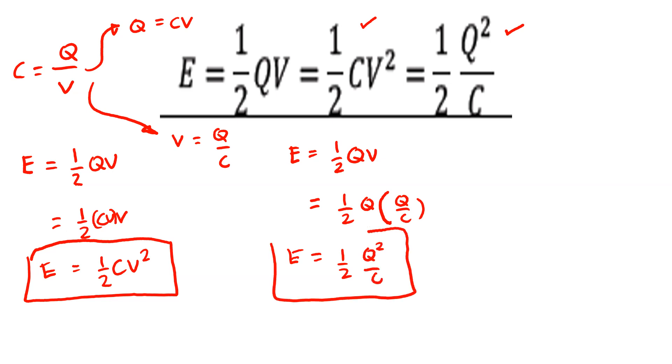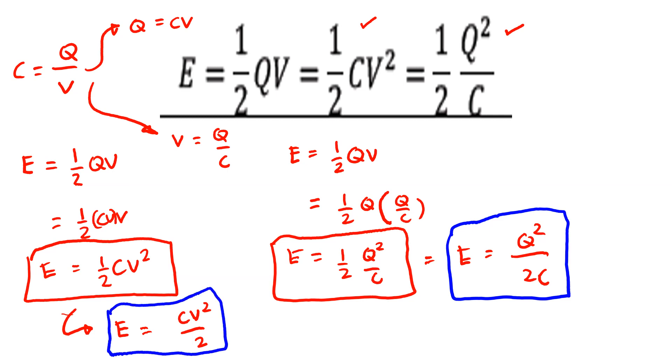I could rewrite this equation as energy is equal to Q squared over 2C. Similarly, I could also rewrite this equation as E is equal to C, V squared over 2. So, these are the other two equations for the energy stored in a capacitor.